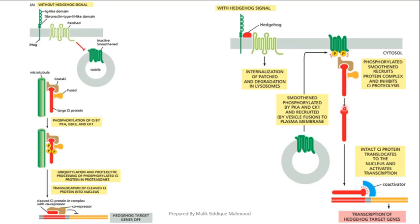Now the CI protein remains in its full activated form and will transfer into the nucleus. After entering the nucleus it will be activated. As compared to the previous state where it acted as a repressor, now it will act as an activator. So this is our basic pathway.